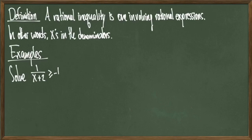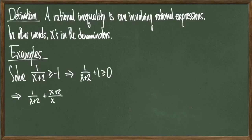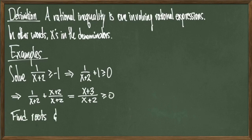This problem would be easier to solve if we had an expression greater than or equal to 0. So let's try to make that happen. We'll make this happen by adding 1 to both sides, and then our 0 is going to show up. The right-hand side has to simplify a bit, so when we add the fractions, we get the revised equation x plus 3 over x plus 2 is greater than or equal to 0.